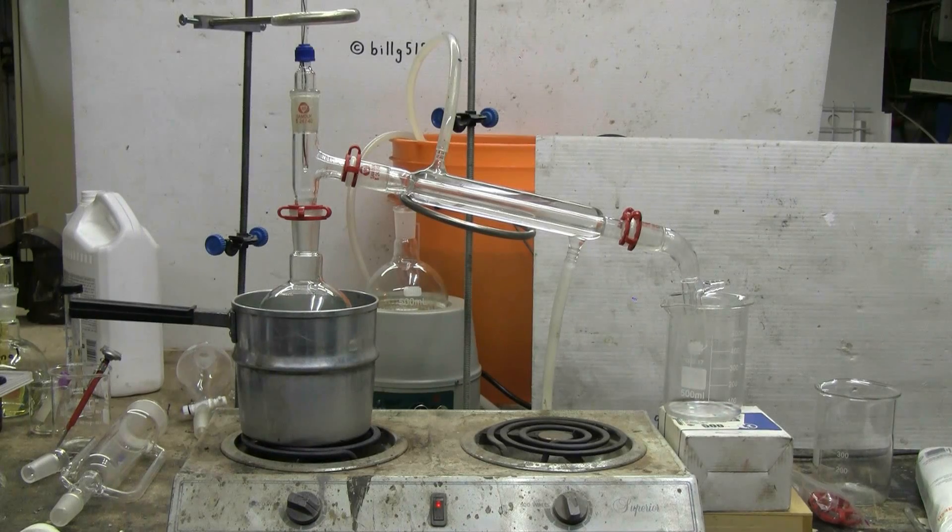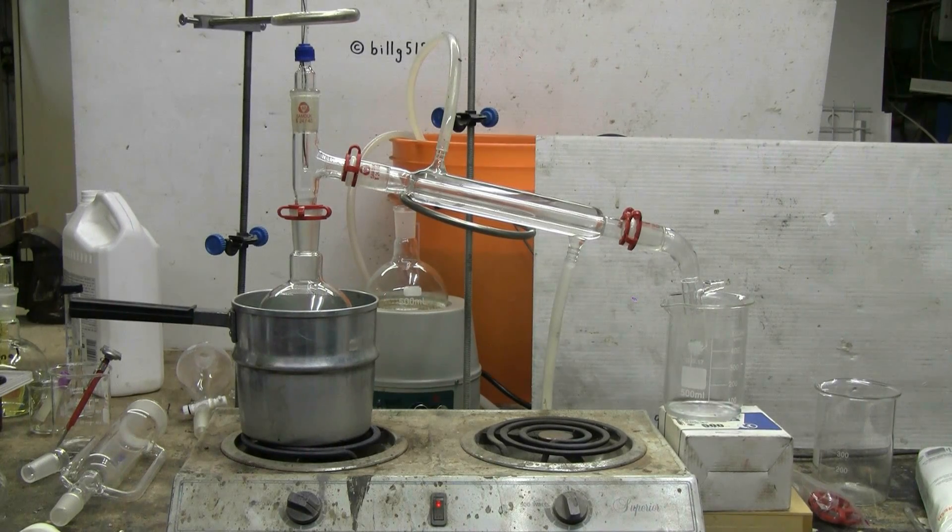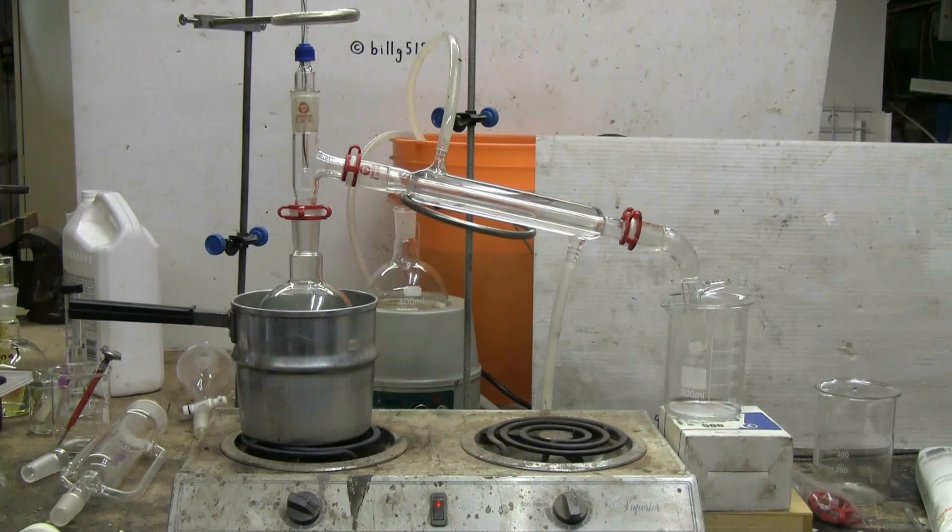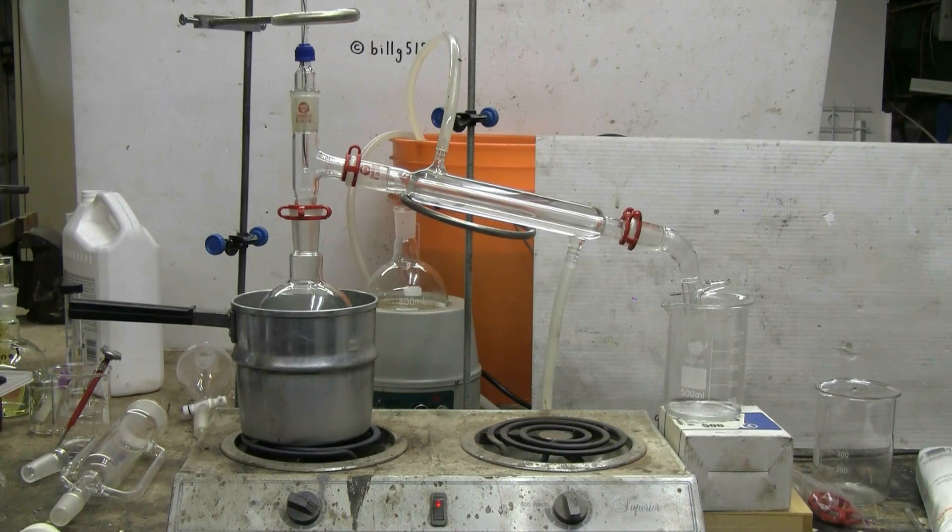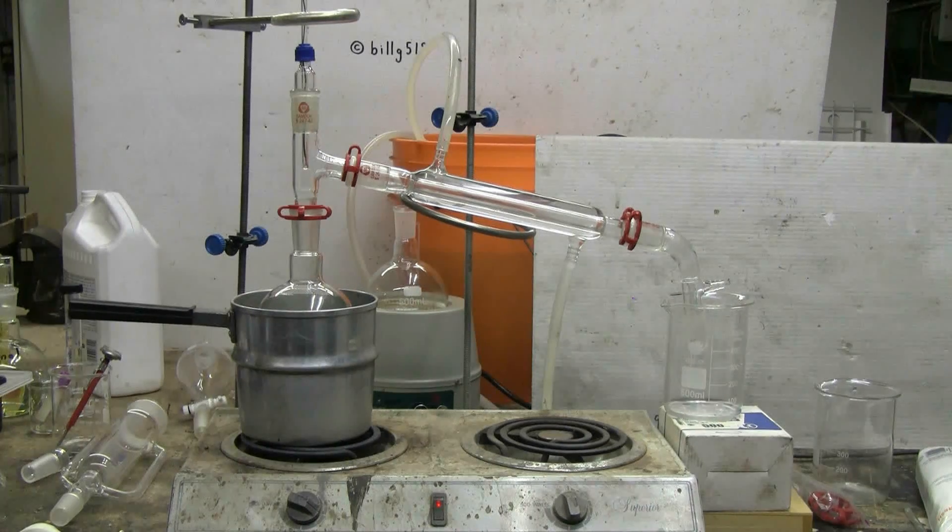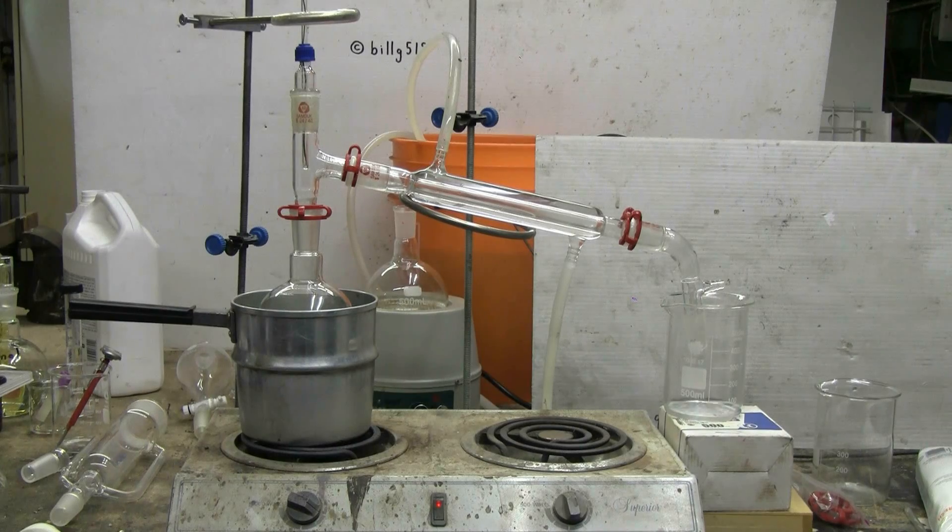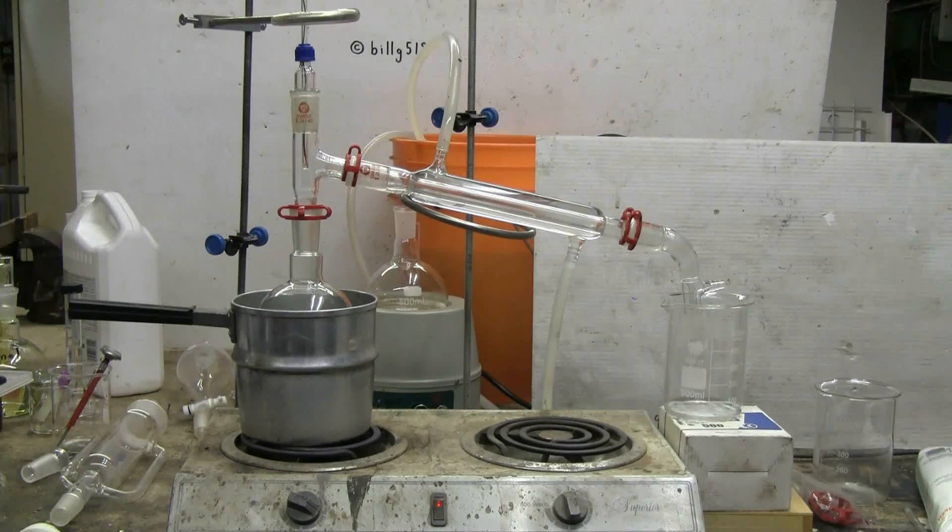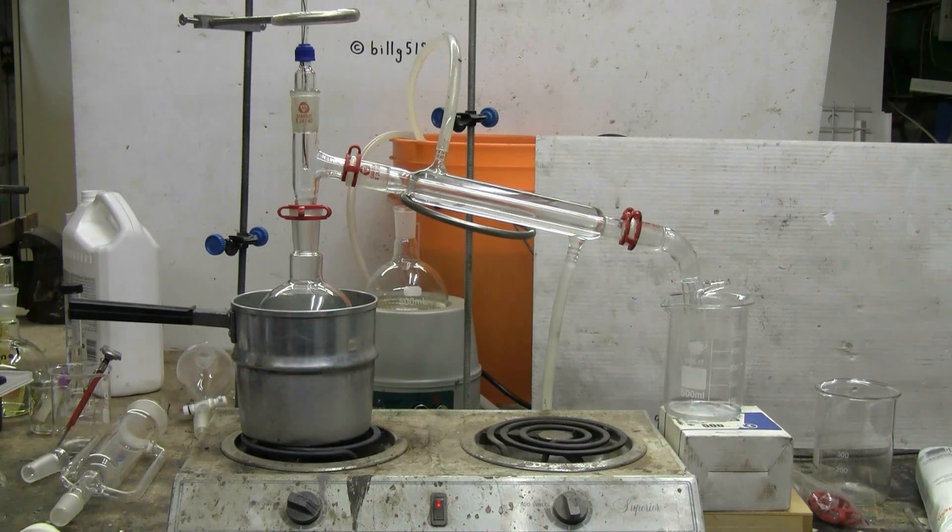I've switched over from the Soxhlet apparatus and set up here for simple distillation to recover my diethyl ether into the 500 milliliter beaker on the right. The same boiling flask that was attached to the Soxhlet apparatus and contains my ether and my extract, if any, from the peony flowers is attached to the distillation rig, of course.